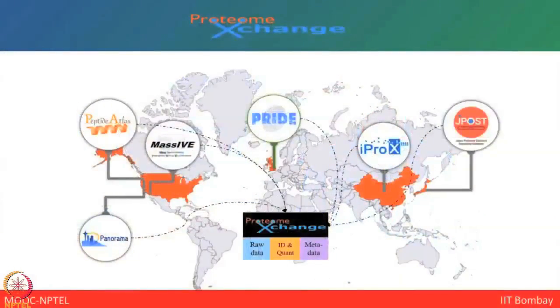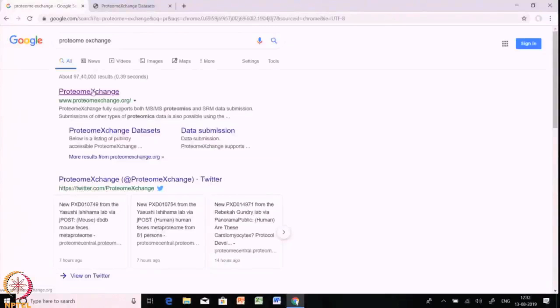Proteome Exchange is a repository that is a collection of different databases like Peptide Atlas, MassIVE, PRIDE, jPOST, and Panorama. This Proteome Exchange hub will help you download processed and pre-processed data. Let me show you a hands-on session on Proteome Exchange and how you can use it for downloading different proteomic experiment datasets for further analysis.